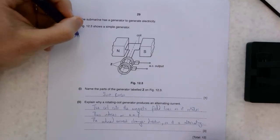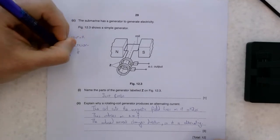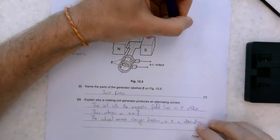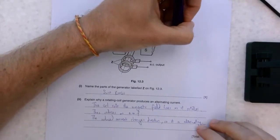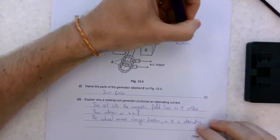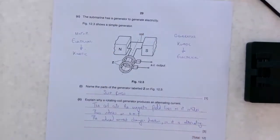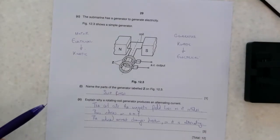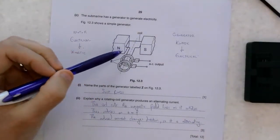In a motor, we have electrical energy becoming kinetic energy. In a generator, it's the other way. We have kinetic energy becoming electrical.